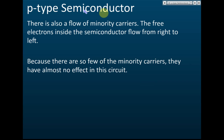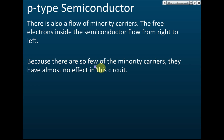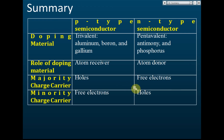In a P-type semiconductor there is also a flow of minority carriers — the free electrons flow from right to left. However, because there are so few minority carriers, they have almost no effect on the circuit. Minority carriers usually contribute very little to the current.